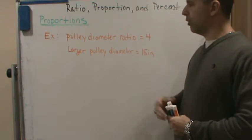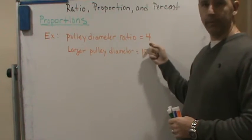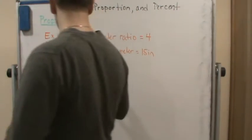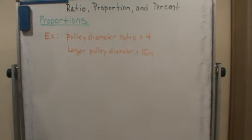We know that the pulley diameter ratio is 4, and they give us the larger pulley diameter of 15 inches. We want to find the diameter of the smaller pulley.